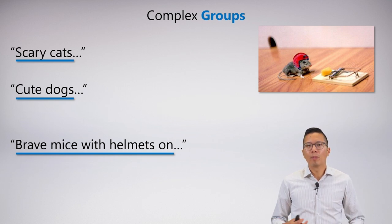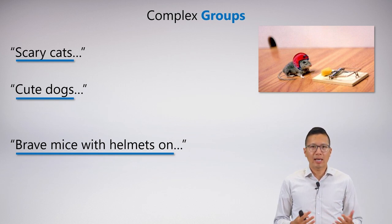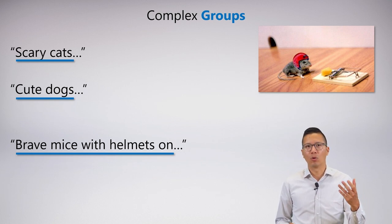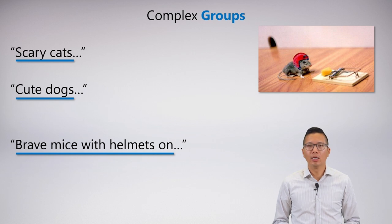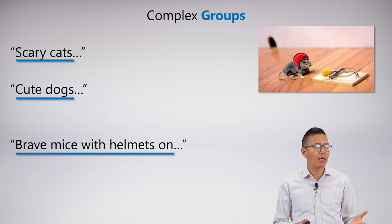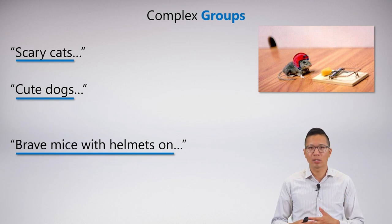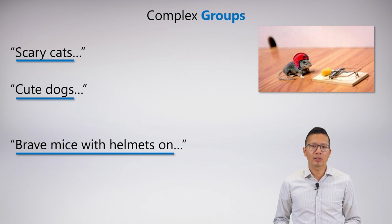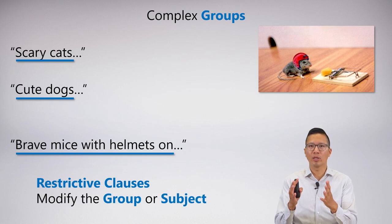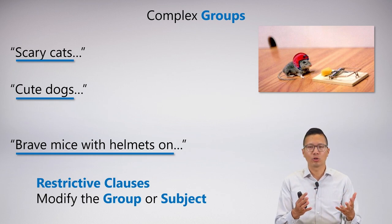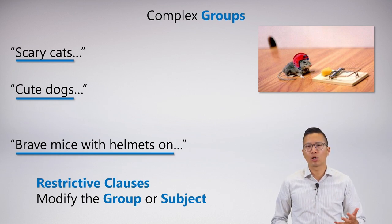So what's a complex group? A complex group is essentially just a subject that has more than one predicate attached to it. 'Scary cats' has the predicate for scary and has the predicate for cats. 'Cute dogs' is a complex subject or group. 'Brave mice with helmets on' — same thing. For a complex group, this is often seen in a restrictive clause, and all these things would go in the antecedent for a universal, or before the main conjunction for an existential.